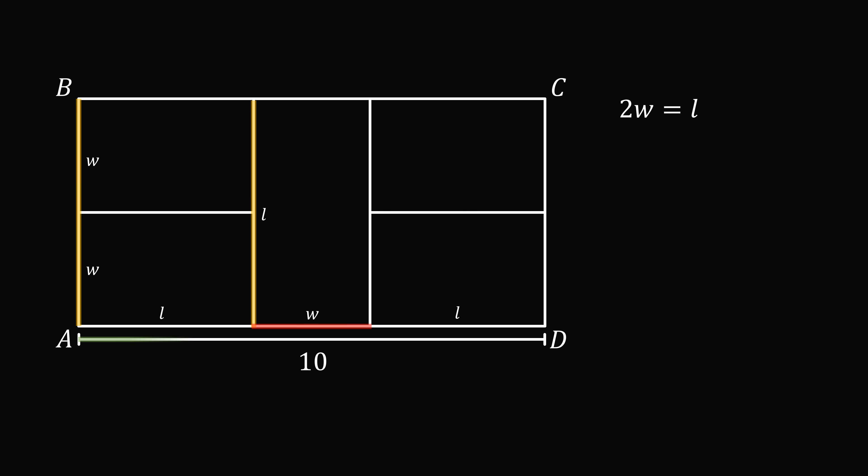Now, from the length of AD, we have that 2L plus W is equal to 10. We can substitute that L is equal to 2W, and then we can simplify this equation to solve that W is equal to 2.